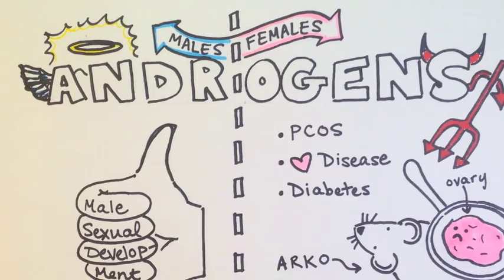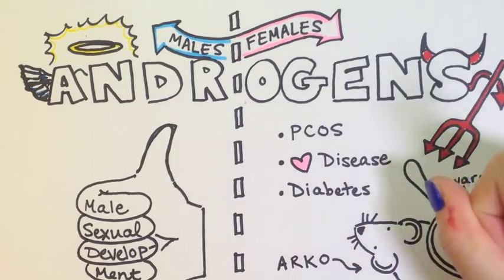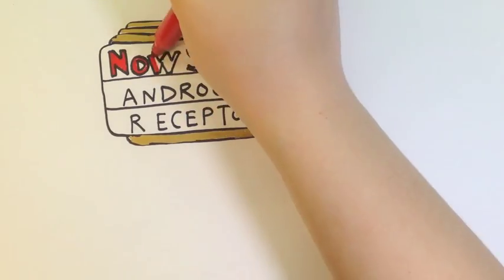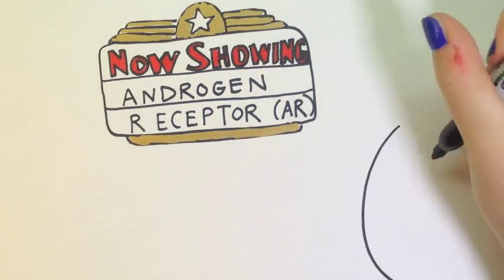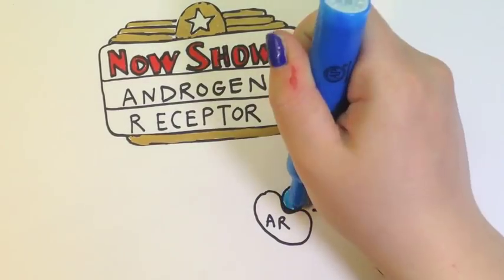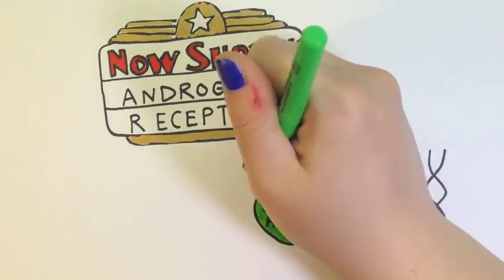So this brings us to my protein of interest, the androgen receptor. Because the androgen receptor is a nuclear receptor, the androgen receptor when activated by androgens translocates into the nucleus and acts as a transcription factor.